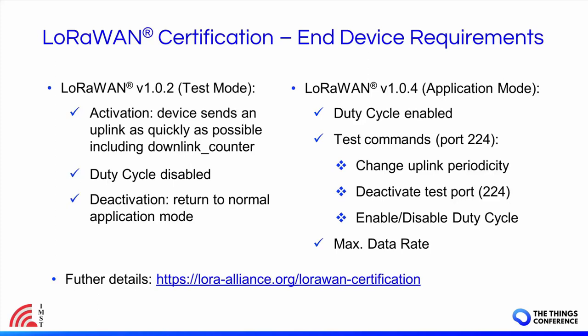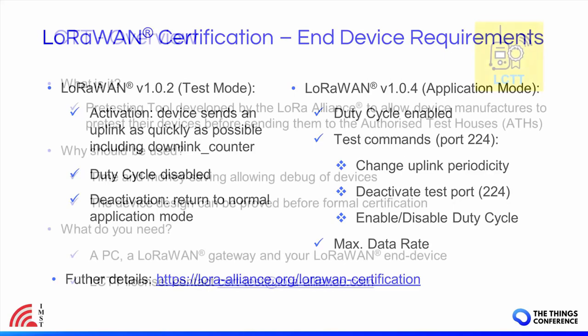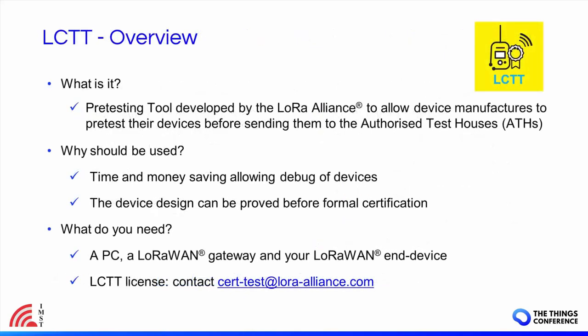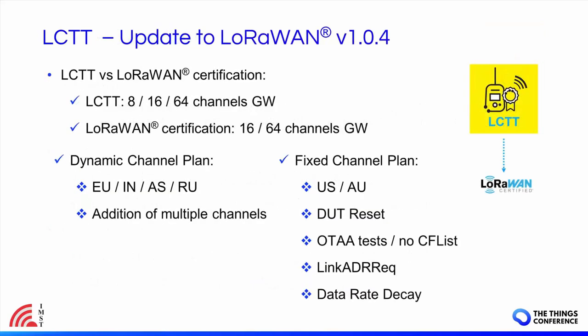Thanks to those requirements, the test harness can run all tests to ensure correct LoRaWAN behavior. Once you have finished the design of your product, the LCTT pre-testing tool may be an interesting option. The LCTT is a pre-testing tool developed by the LoRa Alliance to allow easier pre-testing of devices before sending them for formal LoRaWAN certification. Device manufacturers can save time and money, helping them to debug and finalize their product design. Everything you need is a PC, a LoRaWAN gateway, and your end device. You should contact the LoRa Alliance — this tool is available under the members portal and you will get one free license. The latest LCTT update includes the possibility to test LoRaWAN version 1.0.4.